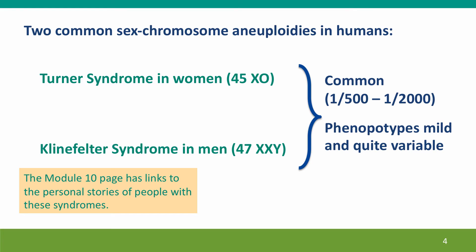The two common sex chromosome aneuploidies I'm going to discuss are Turner syndrome and Klinefelter syndrome. They're both quite common — one in 500 to one in 2000 — and the phenotypes are mild and quite variable. Many of these people are not diagnosed until late in life because they're superficially coping well with the minor problems caused by these conditions.